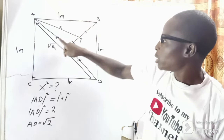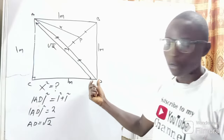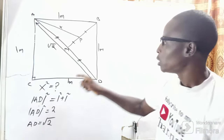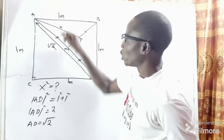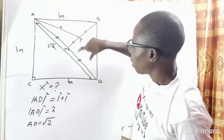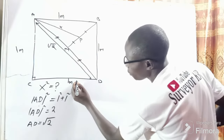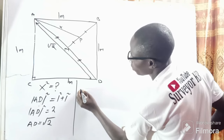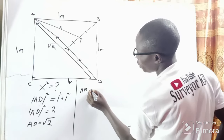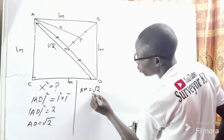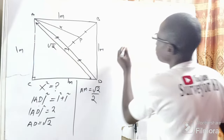Because of the two tick marks, M is equidistant from A and from D. That means we divide the whole line AD by two to get AM and MD. So AM equals the square root of two divided by two.